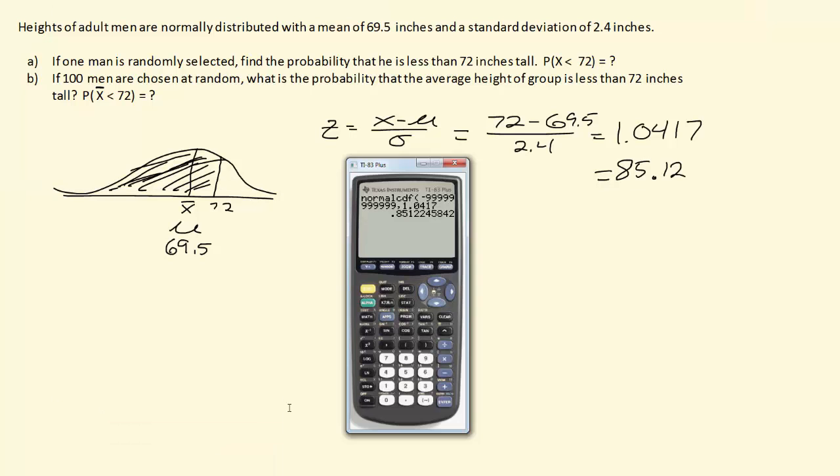If we want to use raw data with the exact same function, the lower bound is still a really, really small number, a bunch of 9's. But now the upper bound is just 72 inches, and then we have to do comma, the mean of 69.5, and then comma the standard deviation of 2.4, and you'll see that we get pretty much the same thing. The only reason why these differ is because we rounded. 1.0417 was a rounded z-score, whereas doing it this way, the second way, is a little bit more accurate. You can use it either way. So that's one way of doing it in technology.